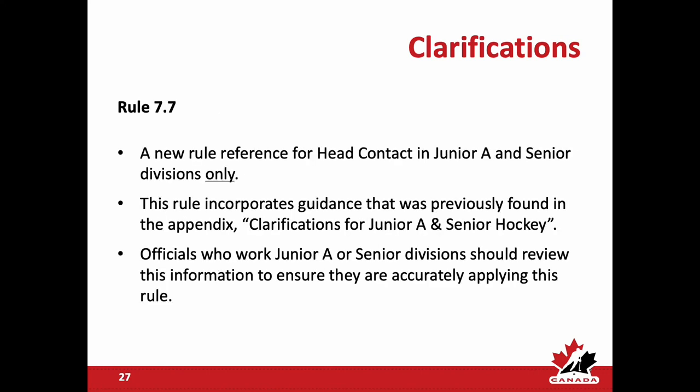Rule 7.7 is a new rule reference for head contact specific to junior and senior divisions only. Rule 7.6 covers head contact criteria for minor and female, while rule 7.7, called out in a gray box, is specific to junior and senior. This rule incorporates all guidelines previously found in the appendix of the Hockey Canada rulebook regarding head contact for these categories, and officials working junior and senior divisions should review the information to ensure accurate application.